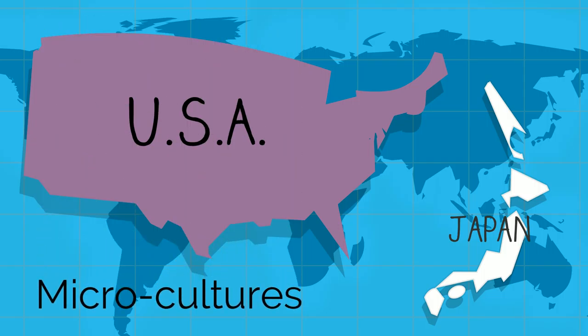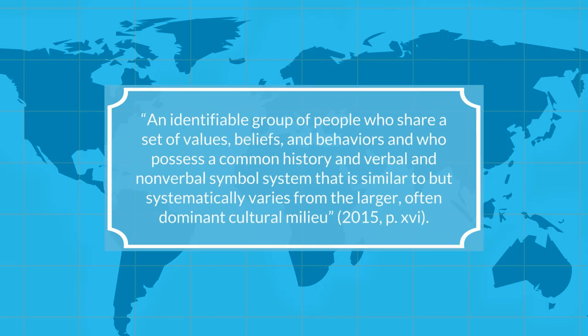There are also what are called microcultures. These are subcultures that exist within larger cultures. New Leap defines microcultures as an identifiable group of people who share a set of values, beliefs, and behaviors, and who possess a common history and verbal and nonverbal symbol system that is similar to, but systematically varies from, the larger, often dominant, cultural milieu.